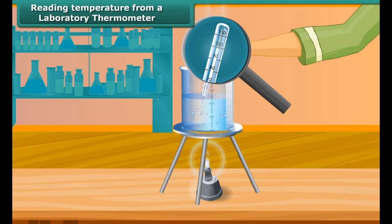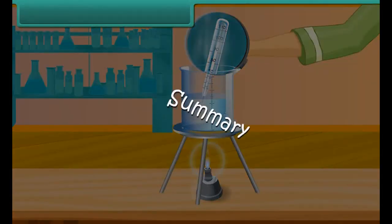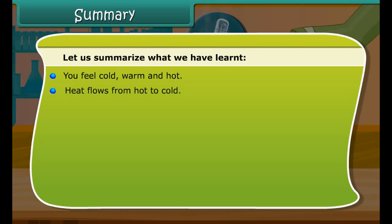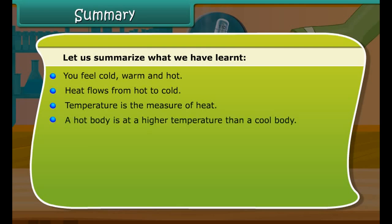Let us now measure the temperature of hot water kept in a beaker. Take a laboratory thermometer and immerse the bulb of the thermometer in the hot water. Watch the shining thread of mercury moving up in the thermometer tube. After some time, the mercury thread will stop rising and stand at one place. Read the temperature on the thermometer tube which corresponds to the top of the mercury thread — this is the temperature of the hot water.